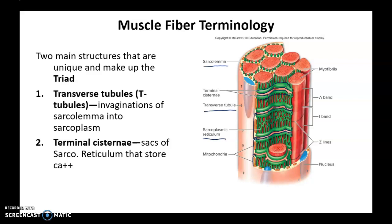Now, together if you look at this unit: this part has a T-tubule, and on either side of the T-tubule you have a terminal cisternae. Together, these three things are called a triad.